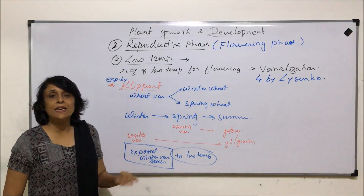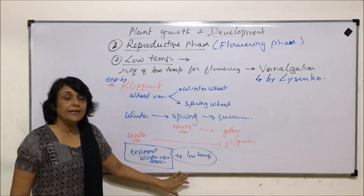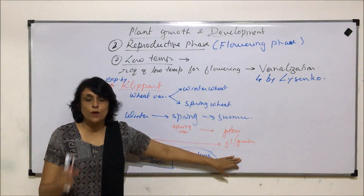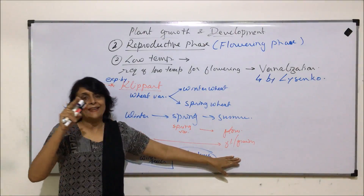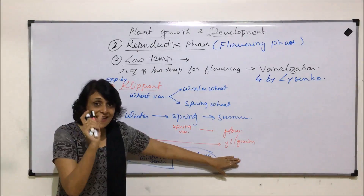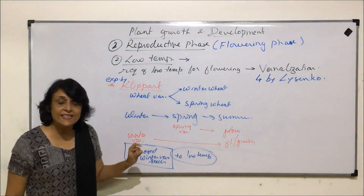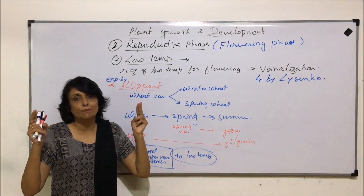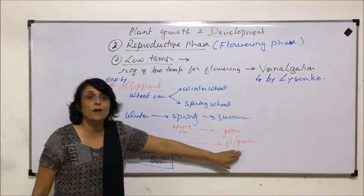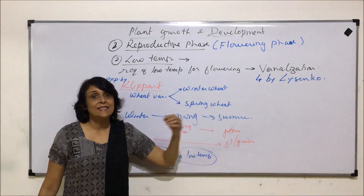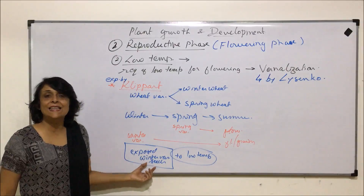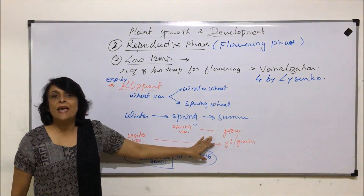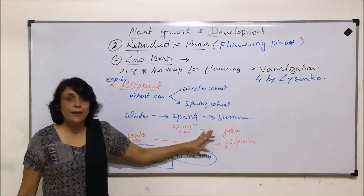This was also seen in many biennial crops, where one winter season is required for flowering to take place. We sow those seeds in one winter season, then the entire spring and summer passes, and in the next winter — when the plant gets that low temperature period — only then does it produce flowers. Scientists understood that these seeds require low temperature treatment, so if given low temperature and then sown, they behave like the other variety.